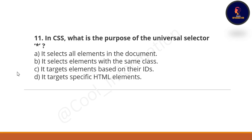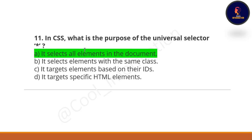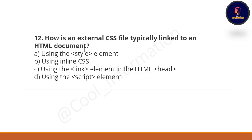Question 11: In CSS, what is the purpose of the universal selector, and what is its symbol? Option A: it selects all elements in the document. Option B: it selects elements with the same class. Option C: it targets elements based on their IDs. Option D: it targets a specific HTML element. The correct option is option A — it selects all elements in the document.